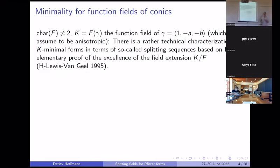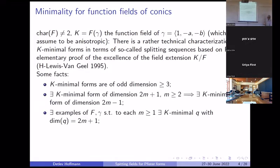You can actually characterize minimal forms in terms of so-called splitting sequences, based on Rost's proof of the excellence of the function field of the conic. It's very technical, so I won't go into it. You can show that these minimal forms are always of odd dimension greater than or equal to three. If you have a minimal form of some odd dimension, you have them in all smaller odd dimensions as well over that field. We constructed examples of fields and conics so that you have minimal forms in any odd dimension greater than three.